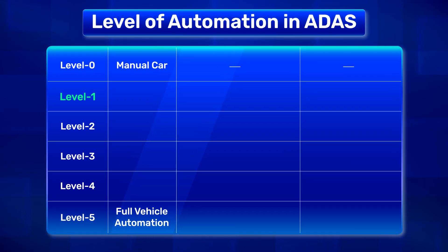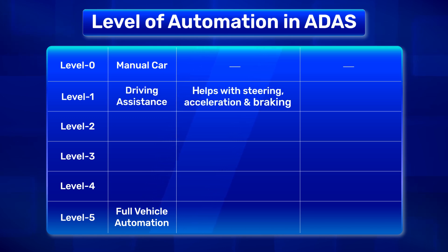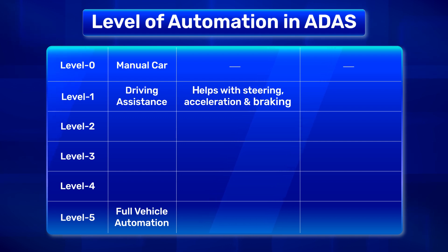ADAS ranges from level 0 automation to level 5 automation, level 0 being as good as manual while level 5 is full vehicle automation. Level 1 automation is driving assistance, which helps in either steering, accelerating or braking the vehicle, but the driver is largely in control.